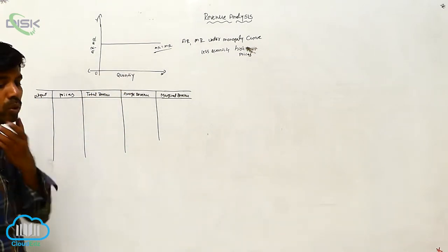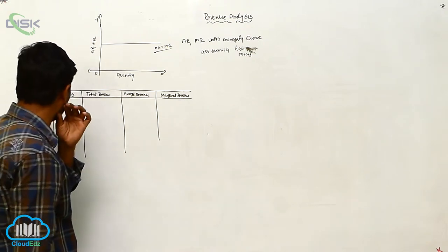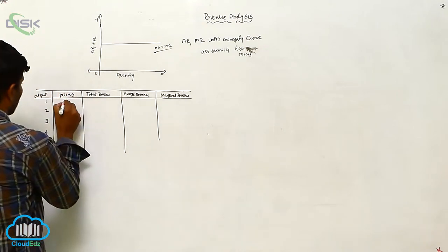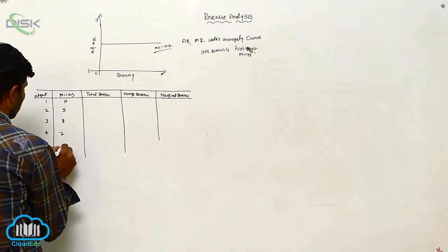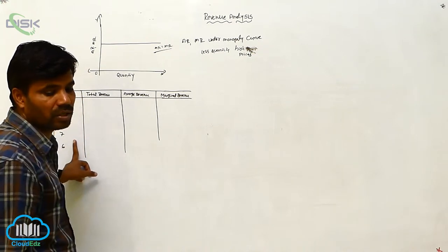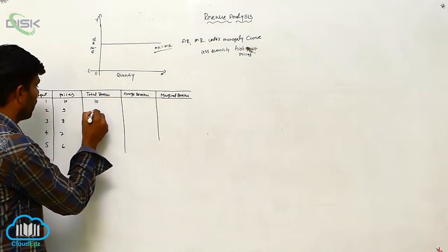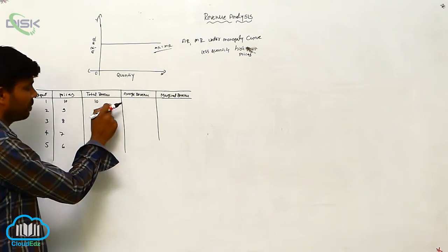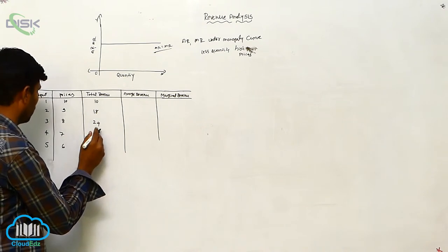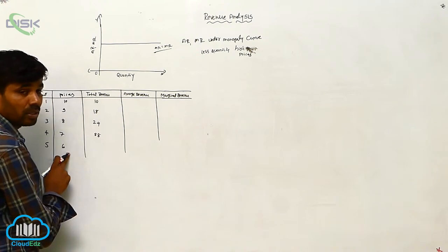Output up to 5 — we are going to consider 1, 2, 3, 4, 5. How many outputs are there? 5 outputs. Prices at different levels: 10, 9, 8, 7, 6. Total revenue: output 1 price 10 gives TR 10; 9 into 2 is 18; 8 into 3 is 24; 7 into 4 is 28; 6 into 5 is 30.